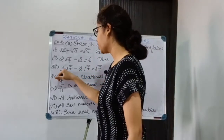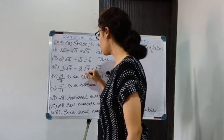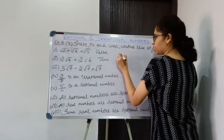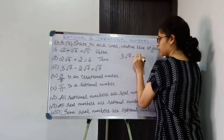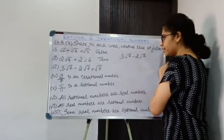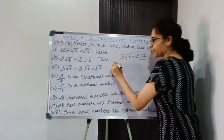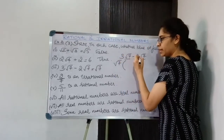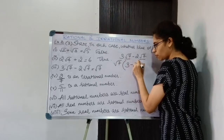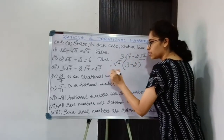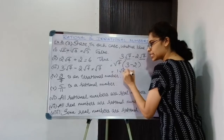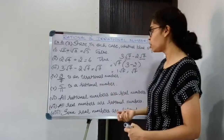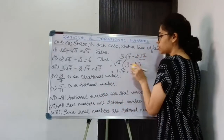Third statement: 3√7 − 2√7 = √7. Taking √7 common from the LHS: √7(3 − 2) = √7 × 1 = √7. So yes, 3√7 − 2√7 = √7. Therefore the statement is true.